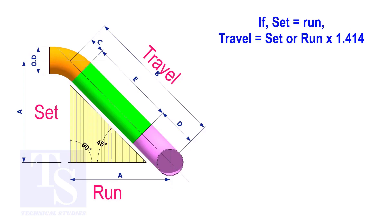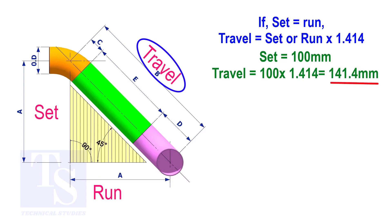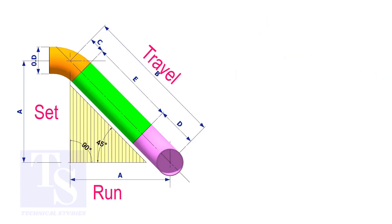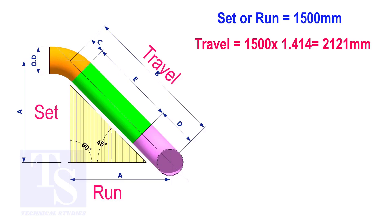Assume that the value of the set is 100. The value of the travel is 100 multiplied by 1.414 equals 141.4. Try another example. Suppose the value of the set or the run is 1500 millimeters. The value of the travel will be 1500 multiplied by 1.414 equals 2121 millimeters.